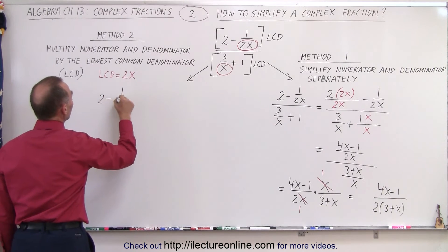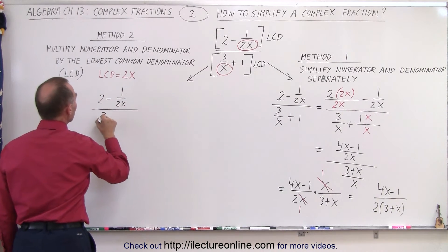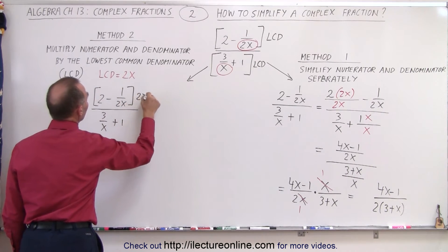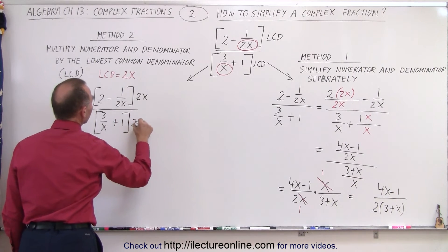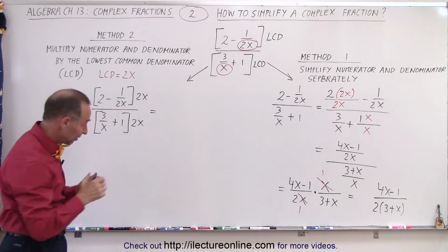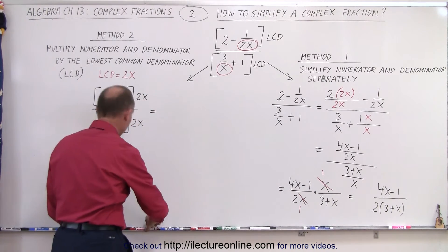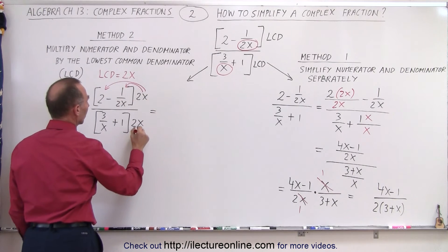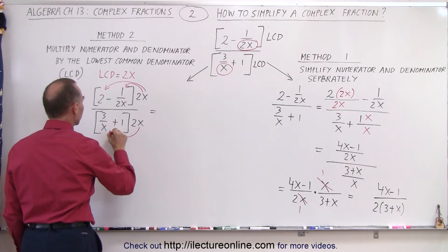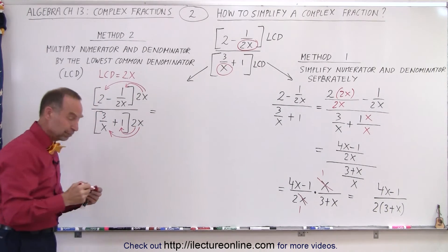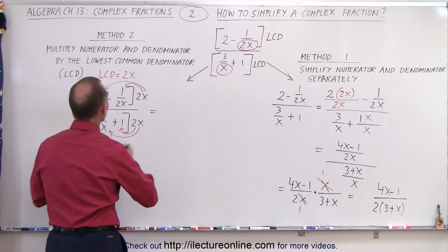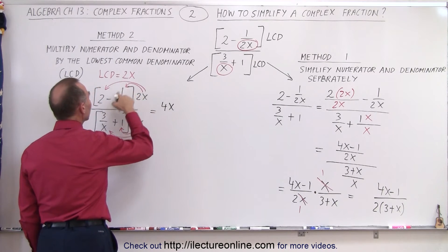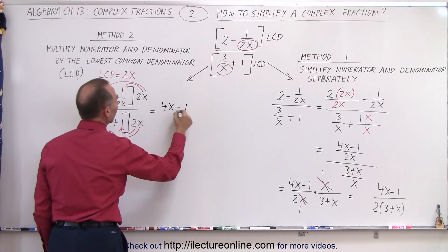So we have (2 minus 1 over 2x) divided by (3 over x plus 1), and the numerator is multiplied by 2x and the denominator is multiplied by 2x. We multiply 2x with the 2 and 2x times 1 over 2x. In the numerator: 2 times 2x equals 4x, and 2x times negative 1 over 2x — the 2x cancels — leaving negative 1.